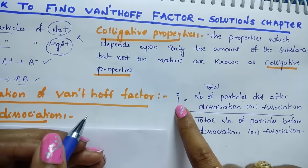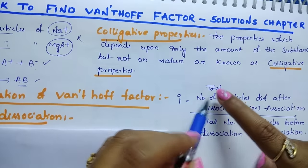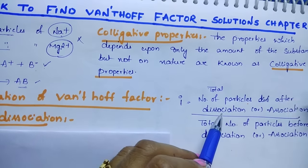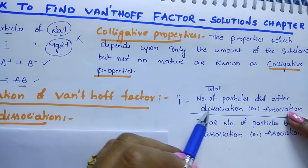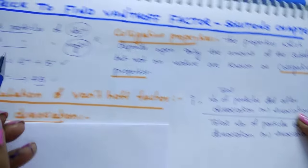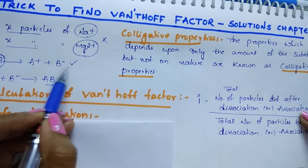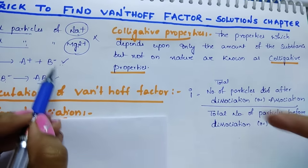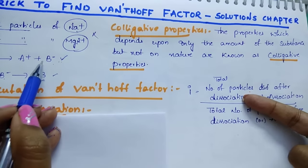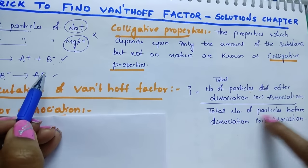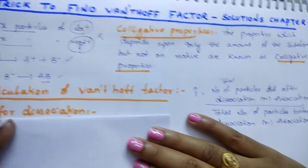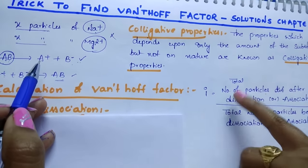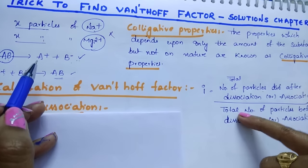Van't Hoff factor I equals the total number of particles after dissociation or association divided by the total number of particles before. Suppose AB dissociates into 2 particles — the number of particles after dissociation is 2, divided by the number before dissociation which is 1. So Van't Hoff factor I equals 2 by 1, that is 2.